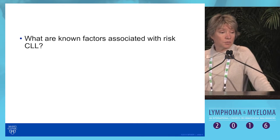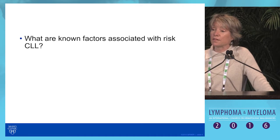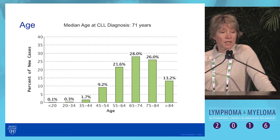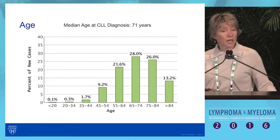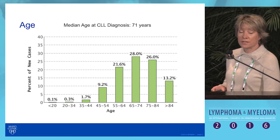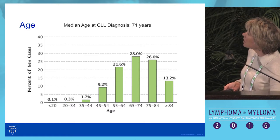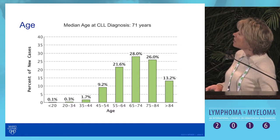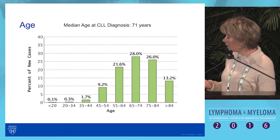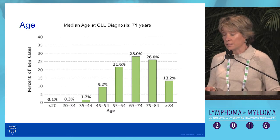So what are the known factors for CLL risk? The first one is age. Here's a plot of the distribution of CLL incidence across age. You can see that individuals ages 65 to 74 years have the highest incidence of CLL, where it's almost nonexistent for those under the age of 20. The median age of onset for CLL is 71 years of age based on the SEER registry.